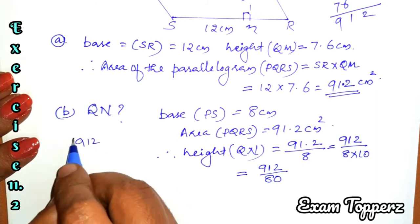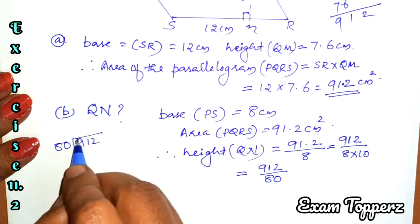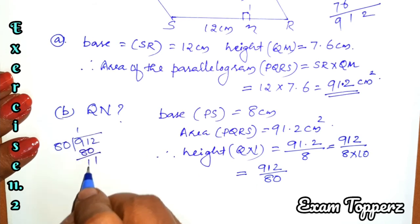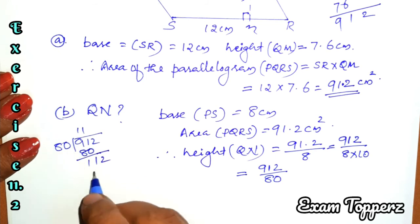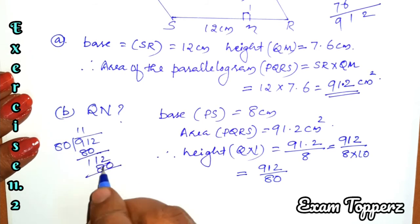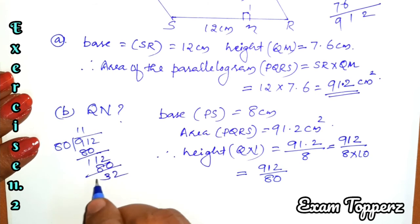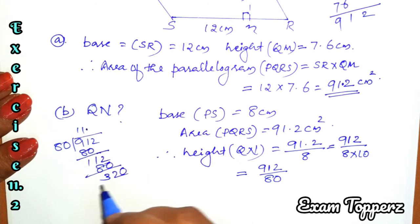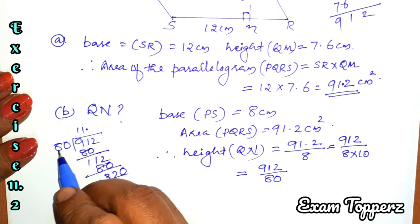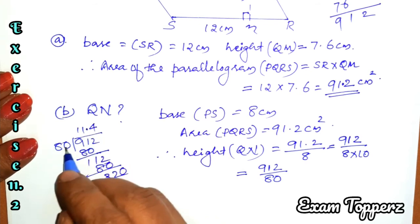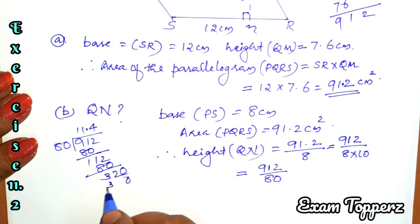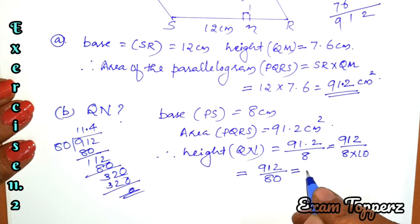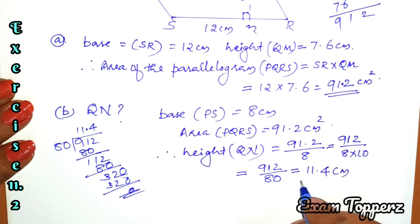Dividing: 912 ÷ 80 — working through the division steps — gives QN equal to 11.4 centimetres. Clear.